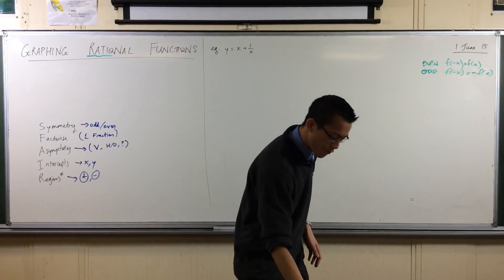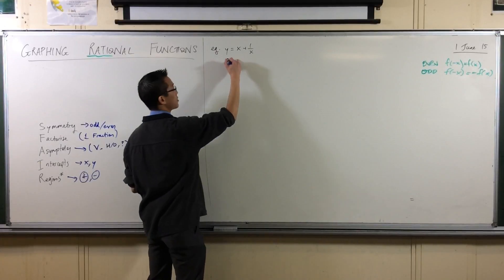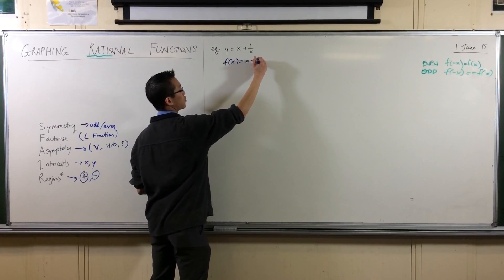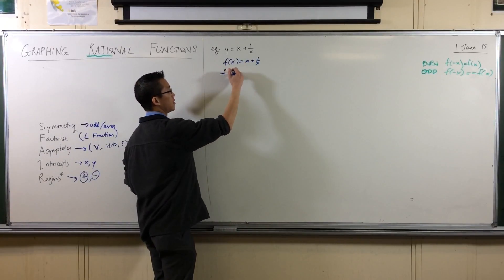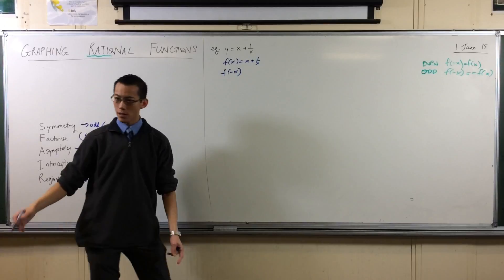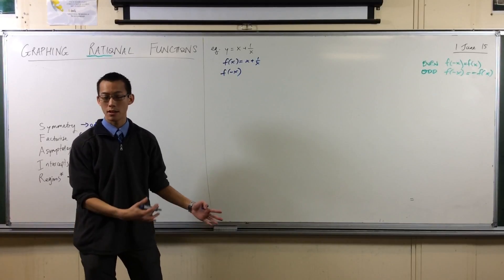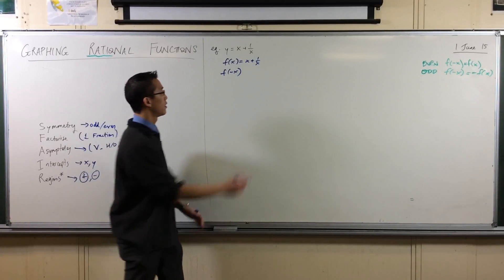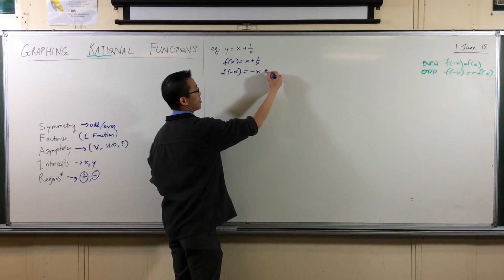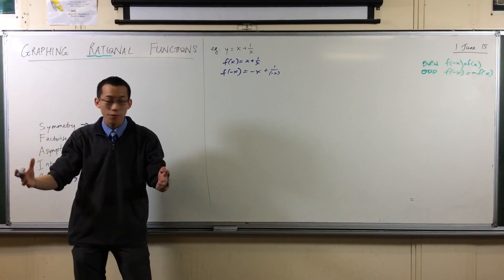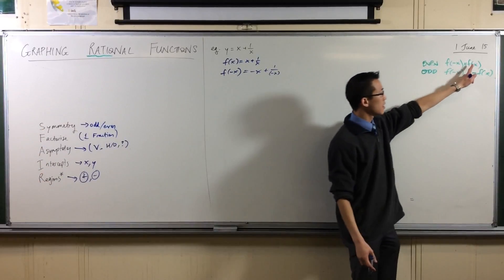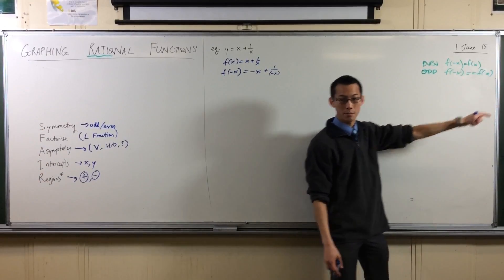The easiest way to test this out is to say, if I define this using function notation, what happens when I put in a negative? Everywhere I see an X, I'm going to replace it with a negative X. What am I going to get? I'm going to get minus X plus 1 on minus X. Does that make sense? Now what I'm looking for is either one of these.